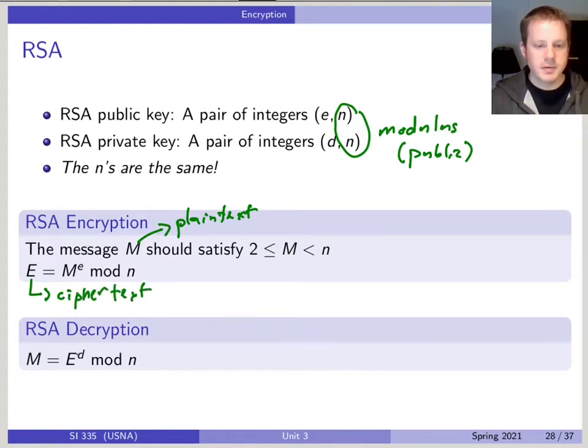And to decrypt, what Bob will do is take that ciphertext and raise it to his secret or private exponent d modulo the same n. And that will give back the original message. Now, again, why does this work? Why does it give back the original message? That's what we'll look at next. What we want to look at first, though, is just how can this happen?